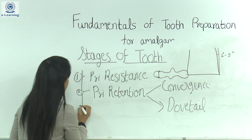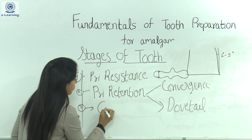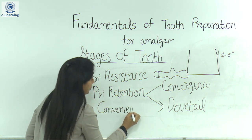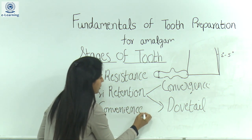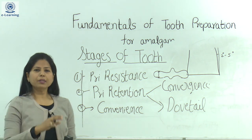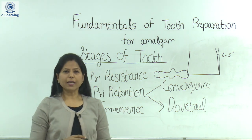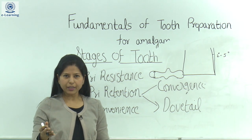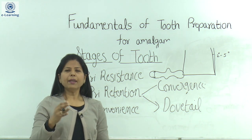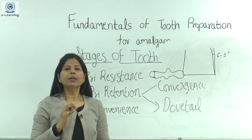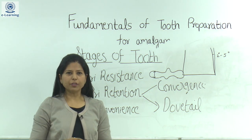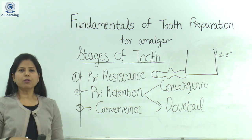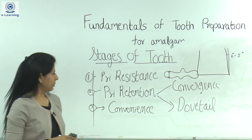Coming next to the convenience form. Convenience form is that form of the cavity which enables easy accessibility, easy visibility, and ease of instrumentation of the cavity. We can check the convenience form by means of a parallelogram condenser.